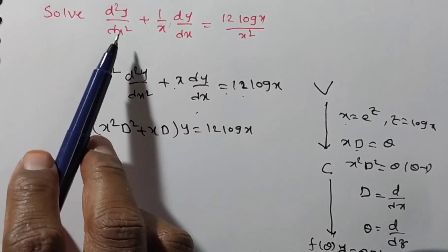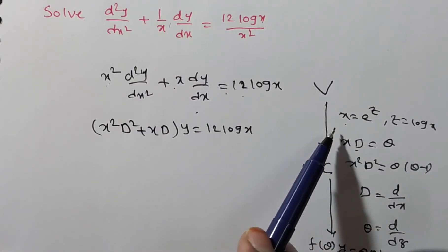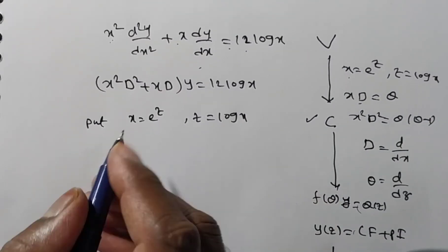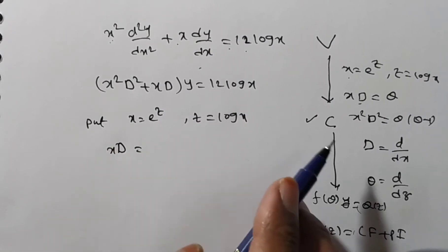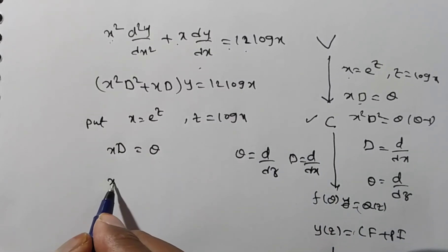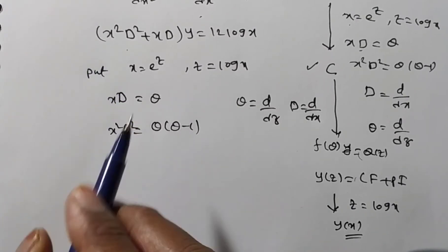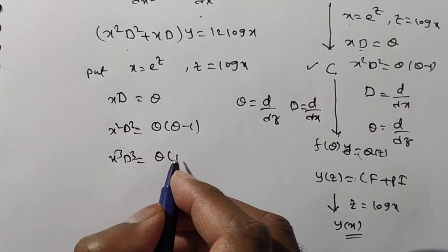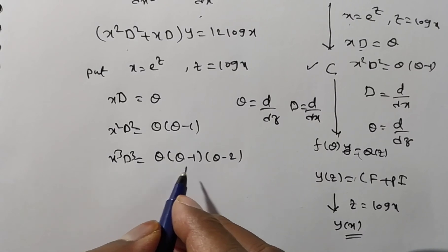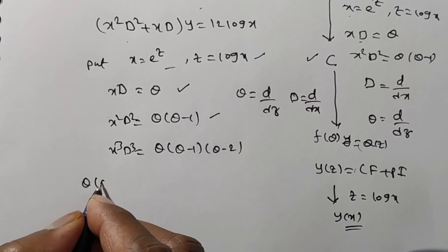The given differential equation is written in standard Euler-Cauchy form and in operator form. Now substituting x = e^z (where z = log x), we replace xD with θ and x²D² with θ(θ−1). Note also that x³D³ would be replaced by θ(θ−1)(θ−2). Substituting these values, we get: [θ(θ−1) + θ]·y = 12 log x. Since z = log x, the right side becomes 12z.